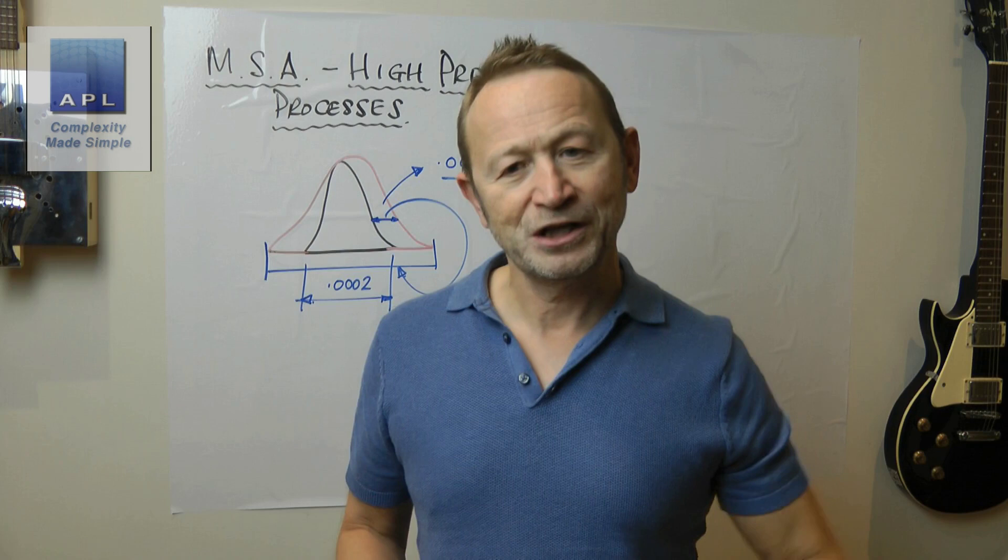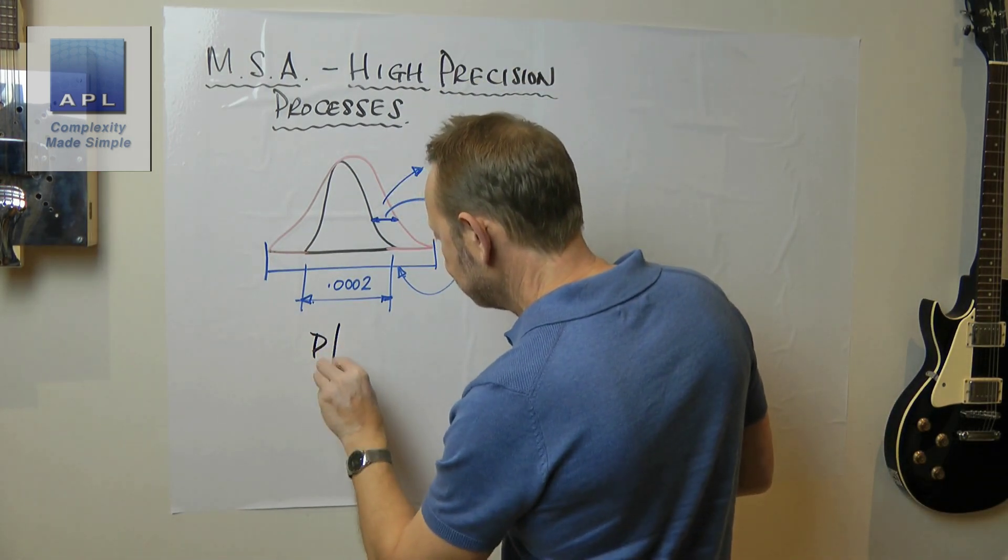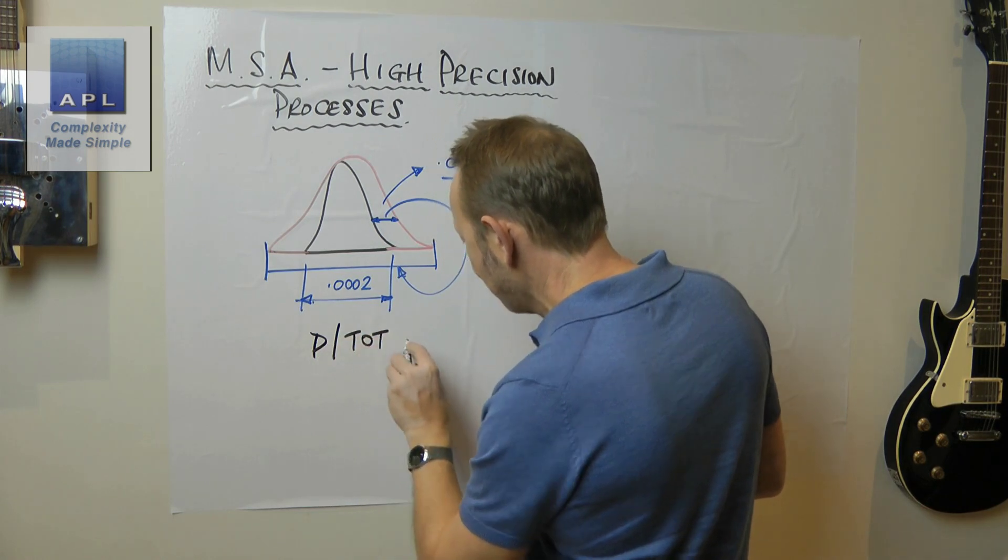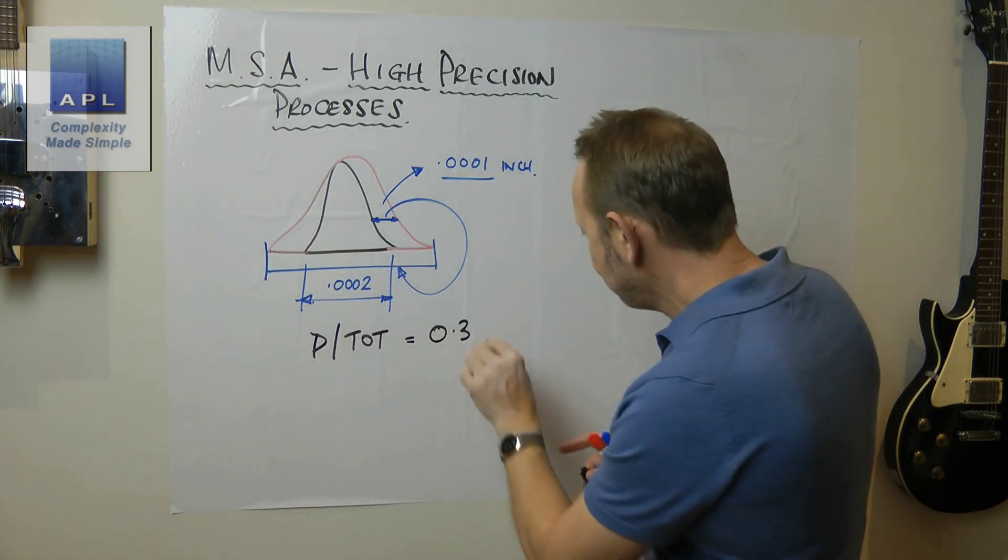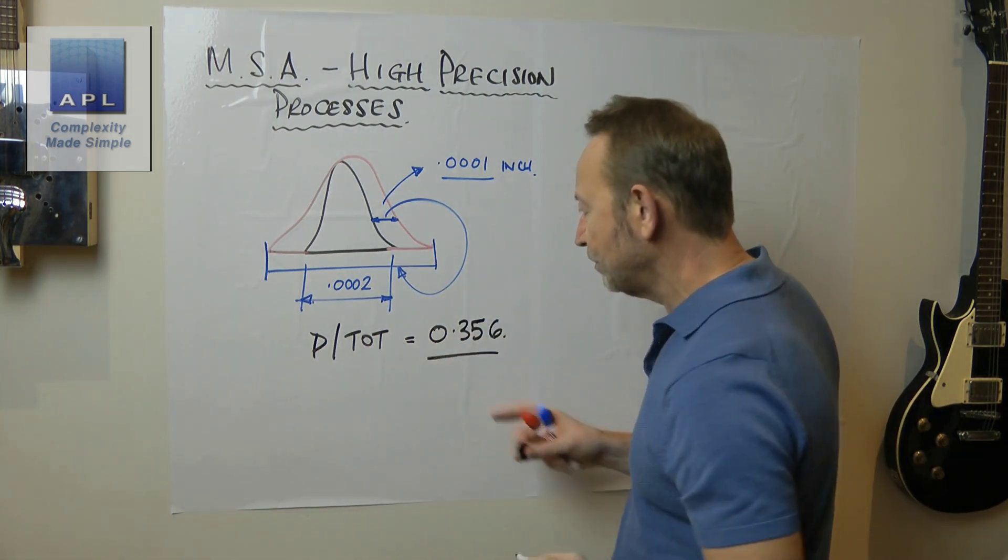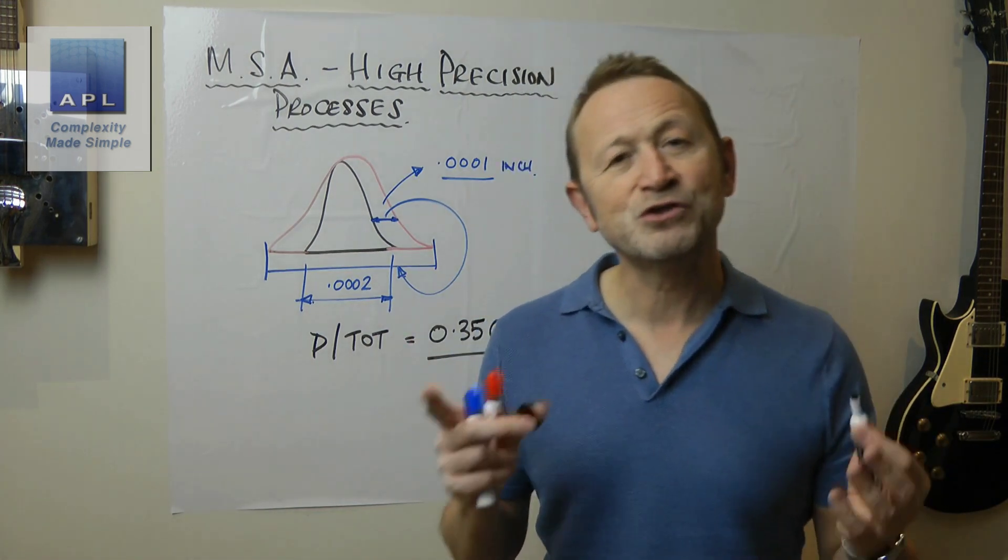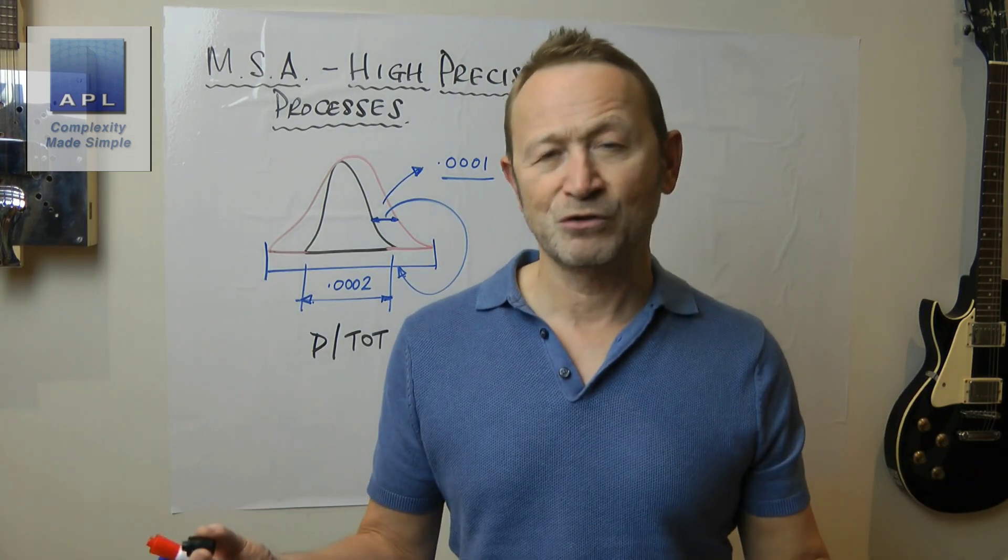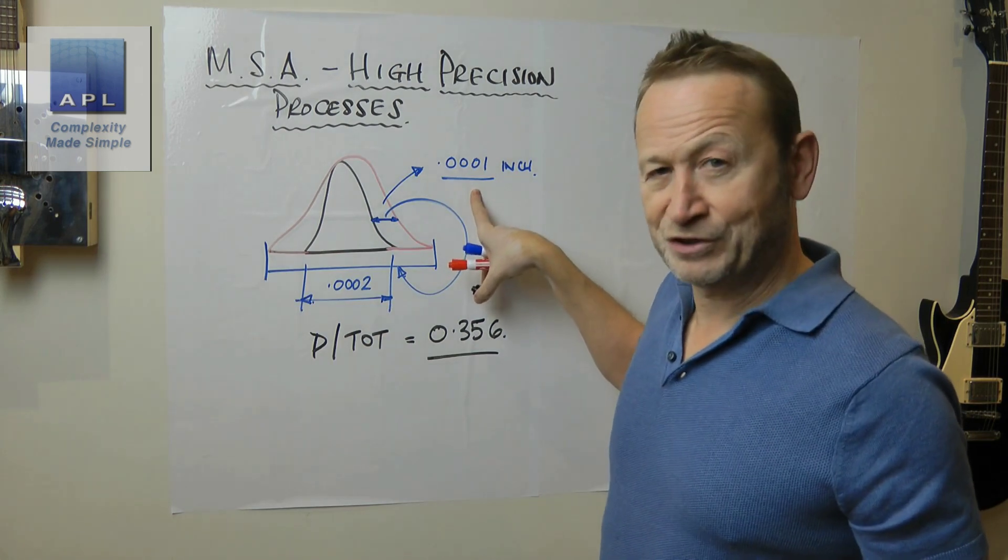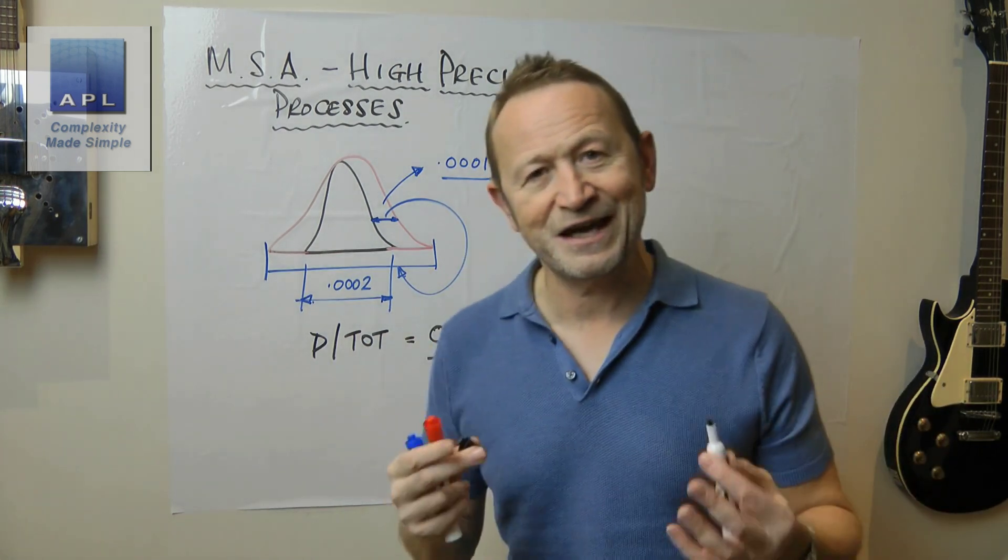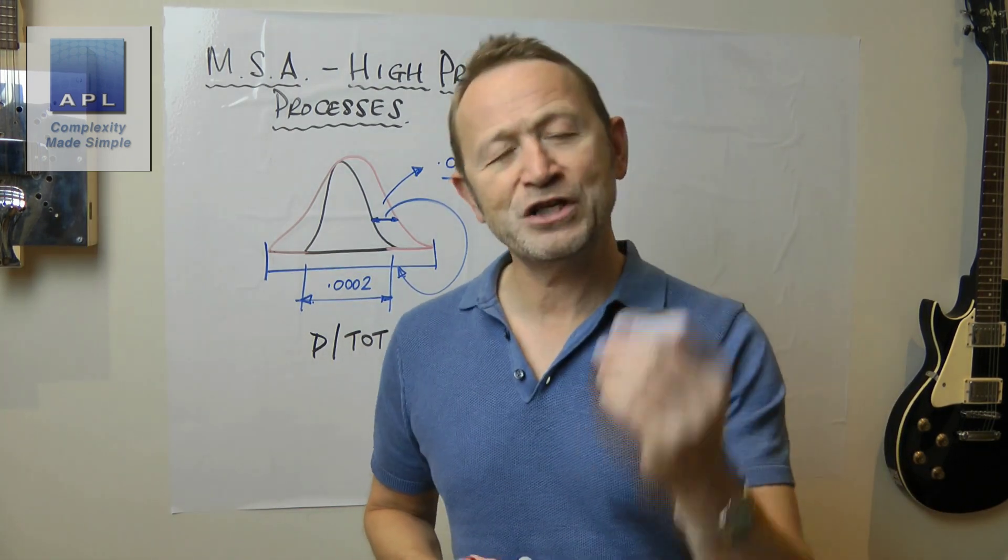So although what we've got is a precision to total, and this might be the best that these guys achieve, the precision to total is 0.356, that might be the best that they're going to do. And now that doesn't pass our normal rules but actually I'm saying to this guy you've got a great measuring system. This wouldn't be an indication of a problem to me.